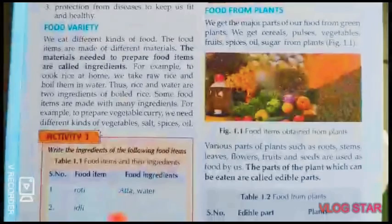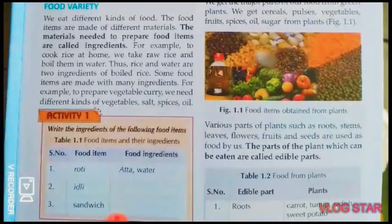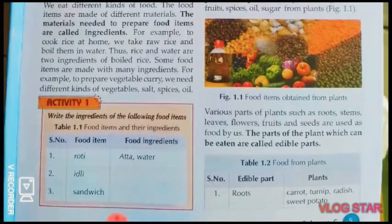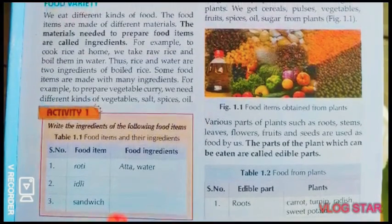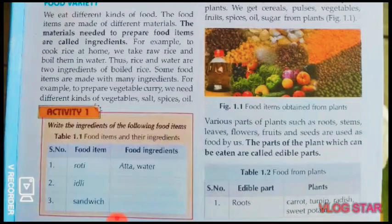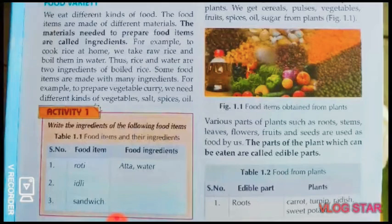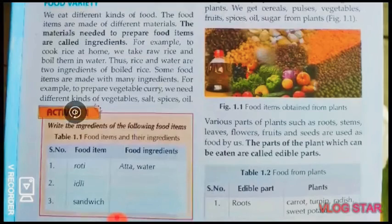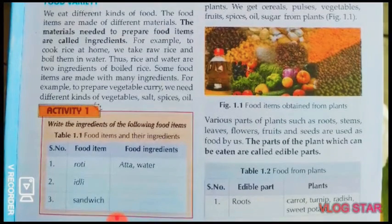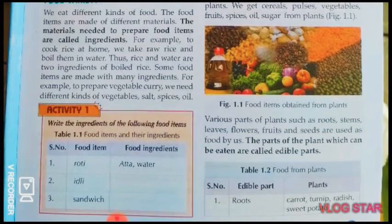Activity number one: write the ingredients of the following food items. For making roti we need atta, water, salt, etc. For making idli we need rice, urad dal, water, etc. For making sandwich we need bread, butter, tomato, cucumber, cheese, etc.